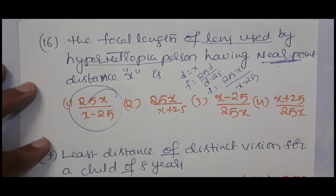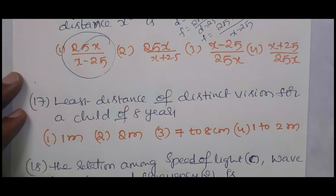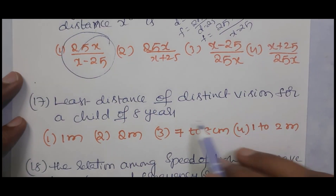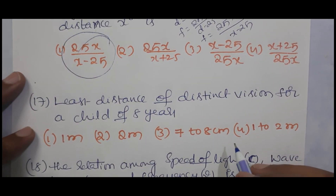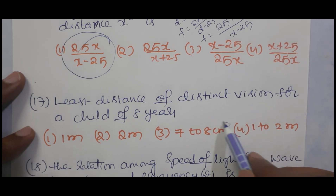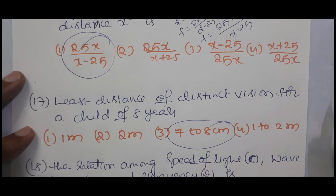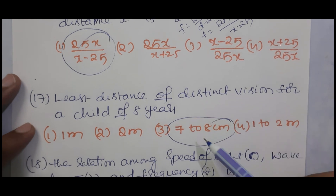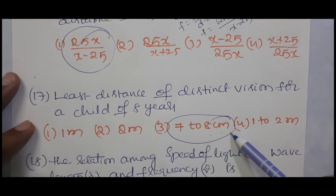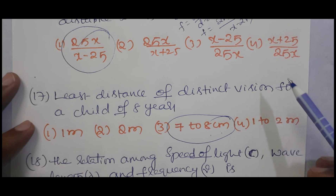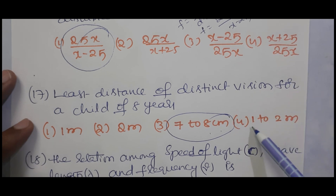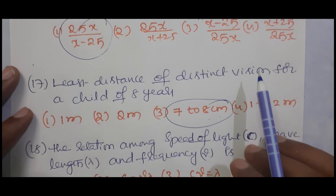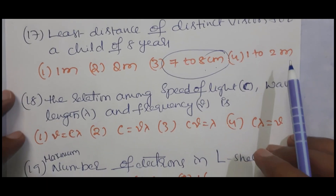The least distance of distinct vision for a child below 10 years is 7 to 8 cm. Normally it is 25 cm. For old age people it is 1 to 2 meters.